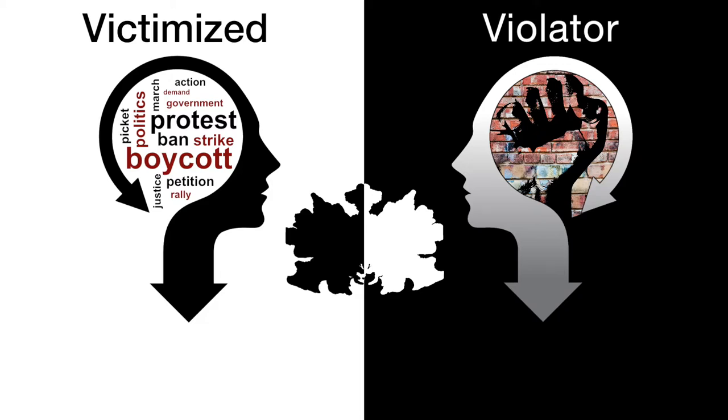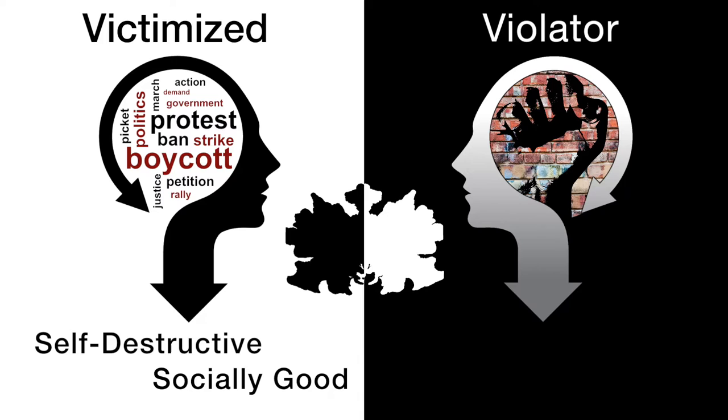And so within those theories, it showed me that we really do occupy that victimized, violator place at the same time — that place where we're self-destructive, but we can also be socially good, or we can be socially destructive and personally good. And I'm looking for that intersectional psychological theory that manages to describe being situated in both places at the same time.